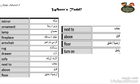The new vocabulary words for this unit include: mirror, ornament, lamp, fireplace, armchair, rug, drawer, sofa, next to, above, floor, and turn on.